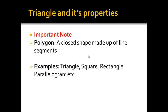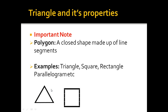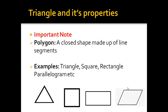Examples of polygons include triangle, square, rectangle, parallelogram, and more — all shapes that are closed and made up of line segments. A triangle has three line segments, a square has four, and so does a rectangle. A polygon is simply a closed shape made up of line segments.